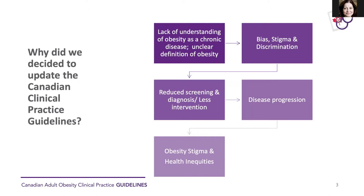This was not an easy decision for us to make at Obesity Canada because we know that developing clinical practice guidelines requires a significant amount of effort and resources. When we were discussing this with our scientific committee and our experts, we realized that the time to update the guidelines was now, because there is a clear lack of understanding of obesity as a chronic disease in Canada, which is partly driven by an unclear definition of obesity. This lack of understanding is leading to increased weight bias, stigma, and discrimination for people living with obesity.